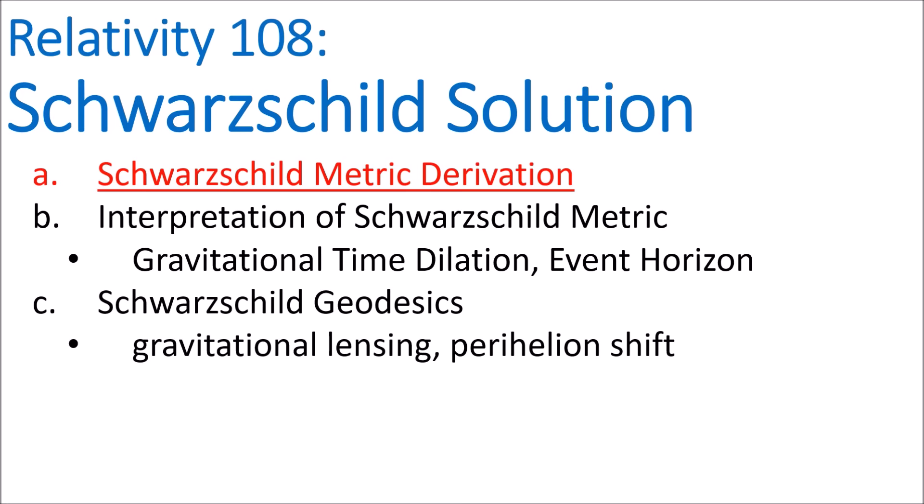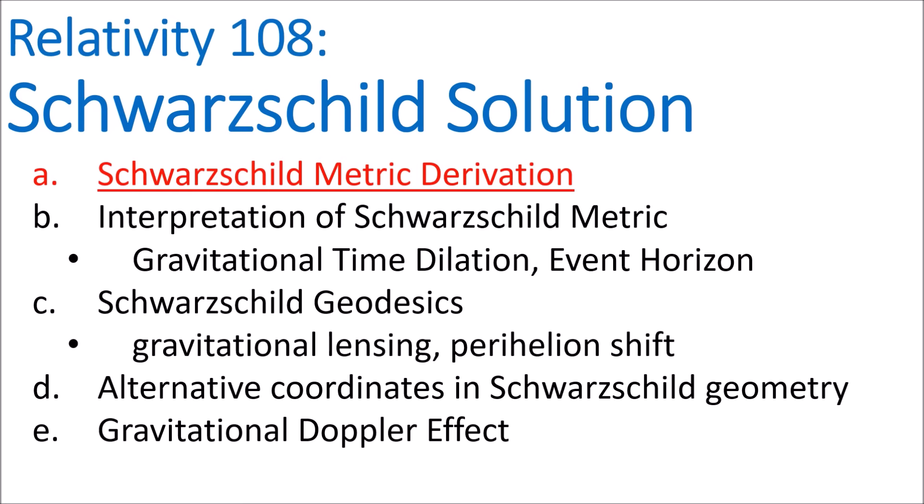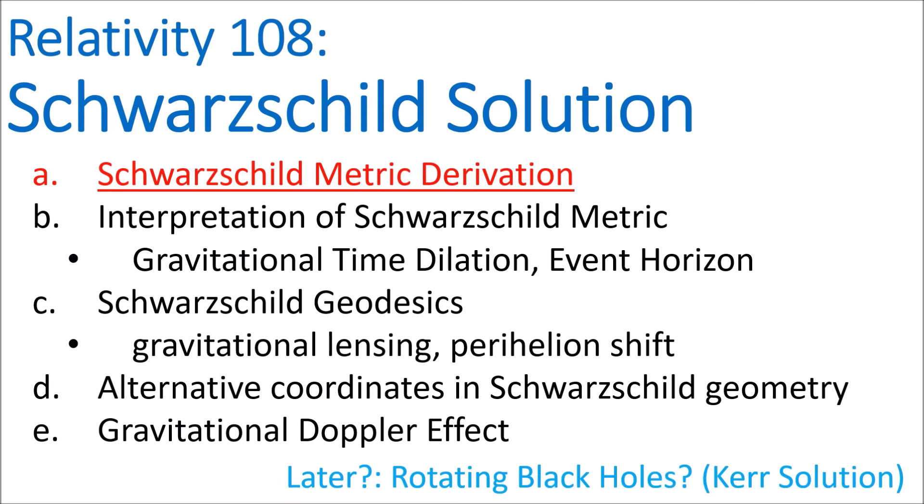In 108c, we'll calculate the geodesics of the Schwarzschild metric, which give the paths of light beams and massive bodies in the presence of gravity, including the perihelion shift of orbits. In 108d, we'll cover some alternative coordinate systems for the Schwarzschild geometry that make it easier to understand, and in 108e, I'll cover the gravitational Doppler effect. I may also cover other topics like rotating black holes and the Kerr metric later.